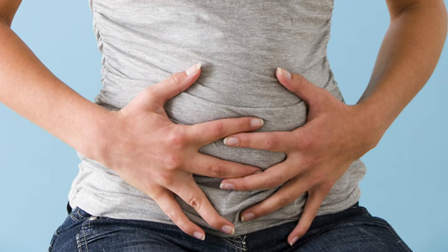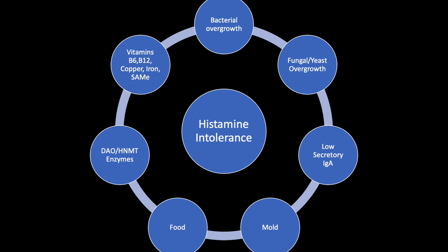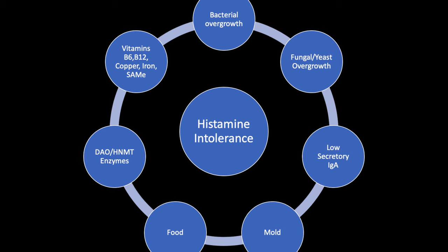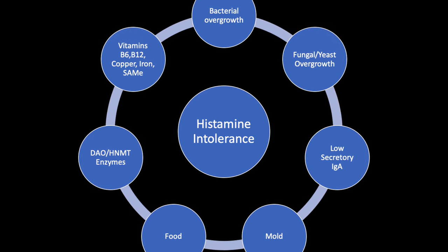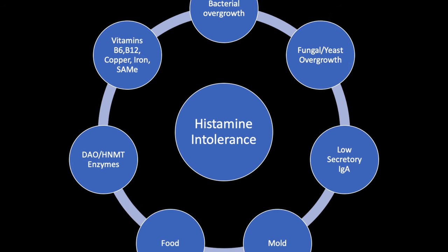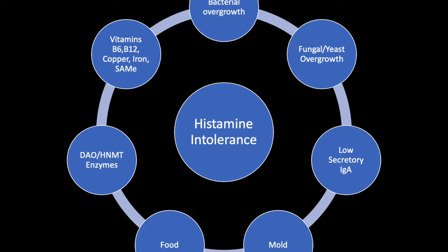The root cause of histamine intolerance can often be traced back to some kind of gut problem. This might include a bacterial infection or overgrowth, a fungal dysbiosis like candida, low secretory IgA, or a food sensitivity or allergy. It's also related to the enzymes that break down histamine — DAO and HNMT. If you unknowingly have histamine intolerance, it can also contribute to and worsen many gut problems, creating this ongoing vicious cycle: SIBO causes histamine intolerance, histamine exacerbates SIBO, and it just keeps going around and around.